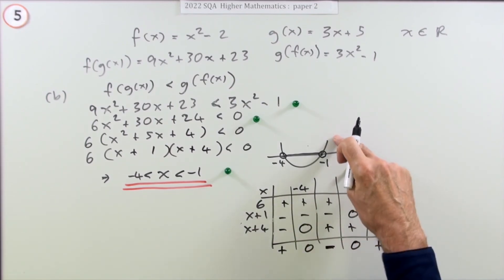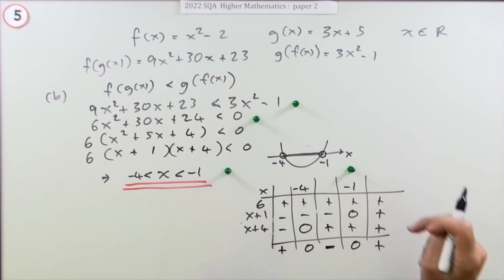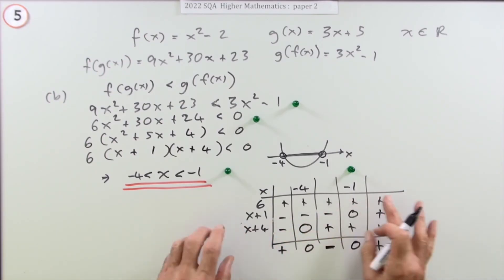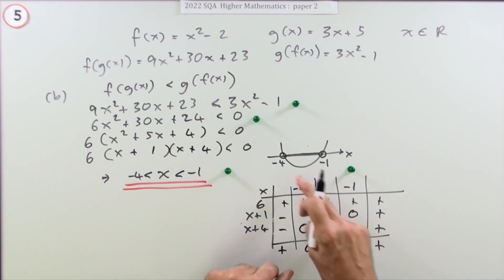It's negative between negative 4 and negative 1. You could do the table method instead of sketching, but the sketch is much easier and less prone to mistakes. The graph is a picture of all the answers.